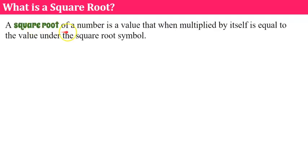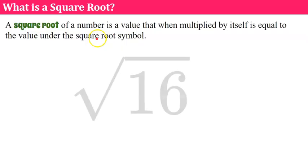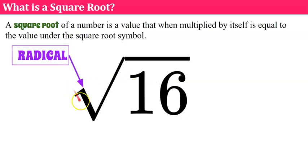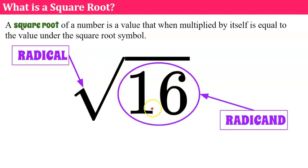First, let's talk about what is a square root. A square root of a number is a value that, when multiplied by itself, is equal to the value under the square root symbol. Recall this symbol in math — the radical. The value underneath the radical is the radicand.